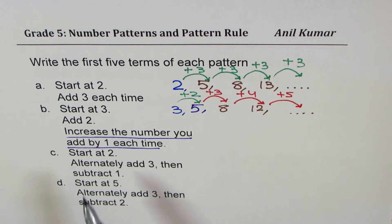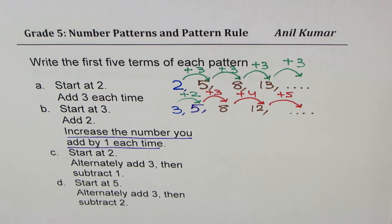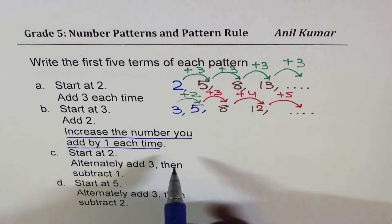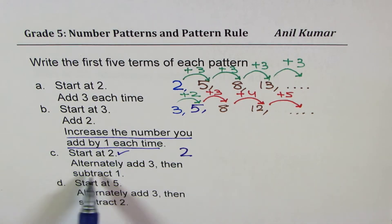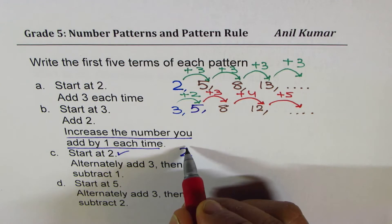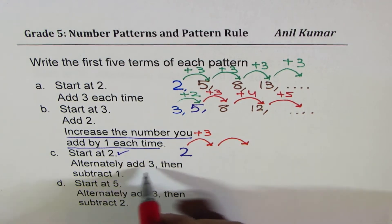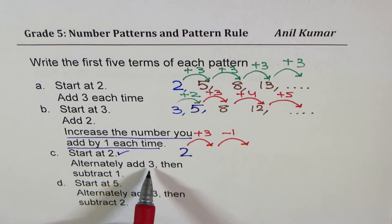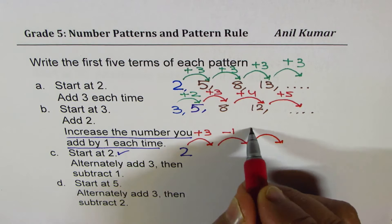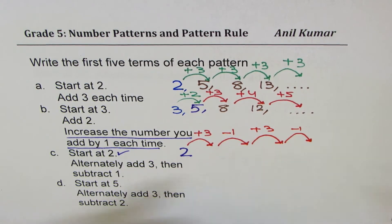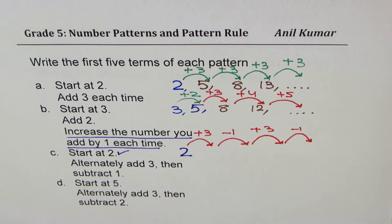Here is another one for you to practice: start at two, alternately add three, then subtract once. It is more complicated. We start at two — that is easy. Now this word 'alternately add, then subtract' means once you add three, then you subtract, and then take away one. So you keep on adding three and keep on taking away one — that is what we mean by alternately add three, then subtract one.